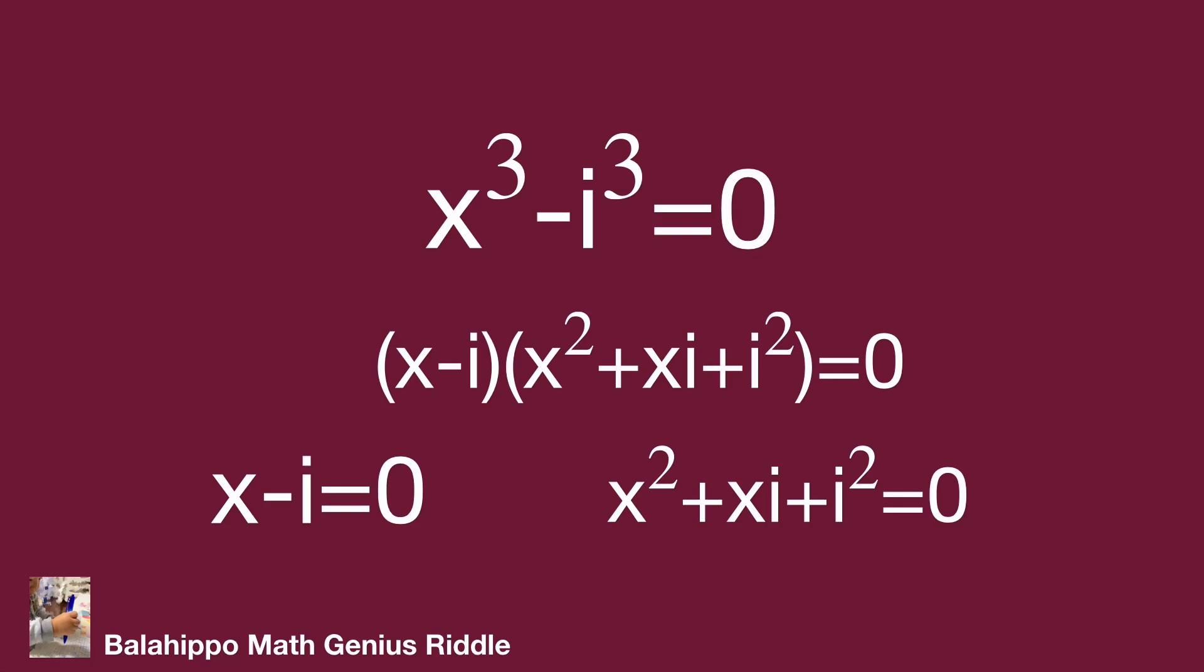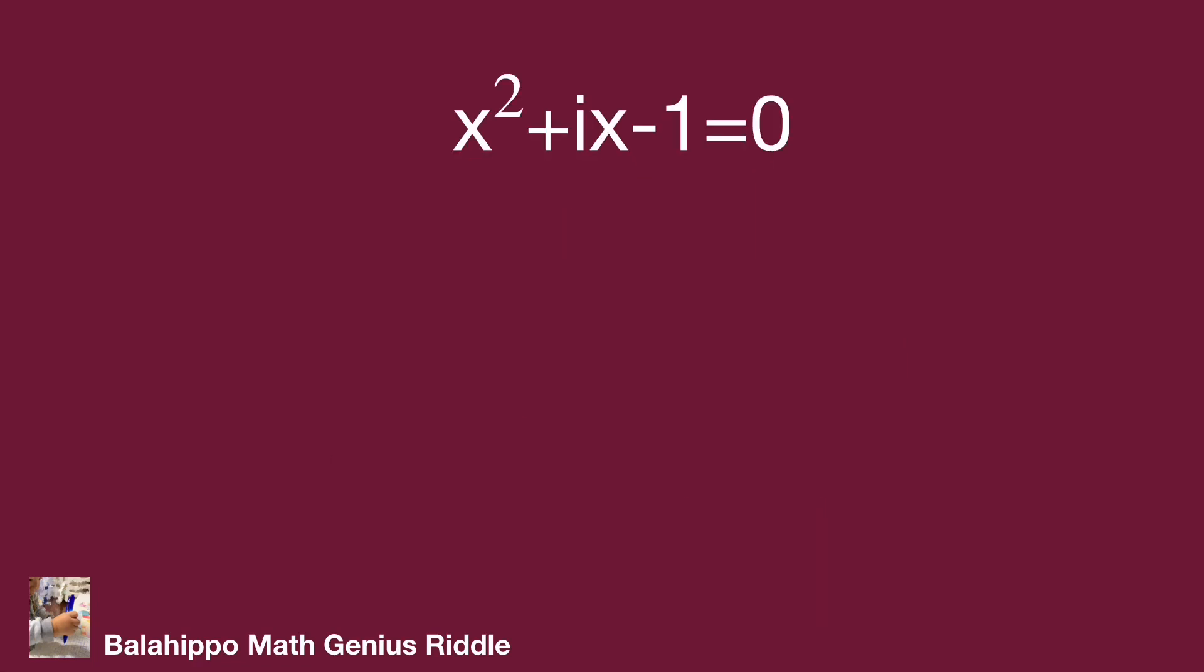x minus i equals 0 gives x equals i, that's one of the answers. Then find the other answer from x² + xi + i² equals 0. i² equals minus 1, so it becomes x² + ix - 1 equals 0.